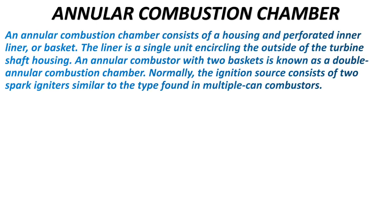An annular combustion chamber consists of a housing and perforated inner liner or basket. The liner is a single unit encircling the outside of a turbine shaft housing. An annular combustor with two baskets is known as a double annular combustion chamber. Normally the ignition source consists of two spark igniters, similar to the type found in a multiple can combustor.